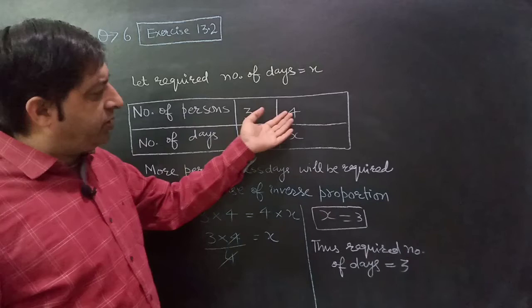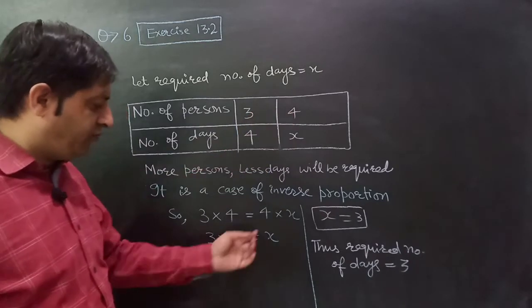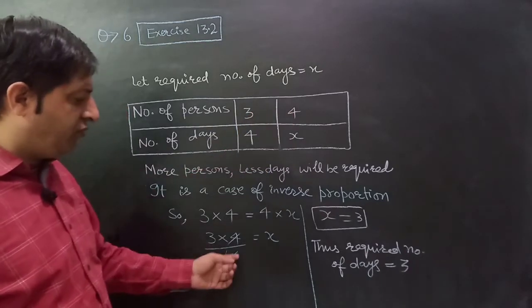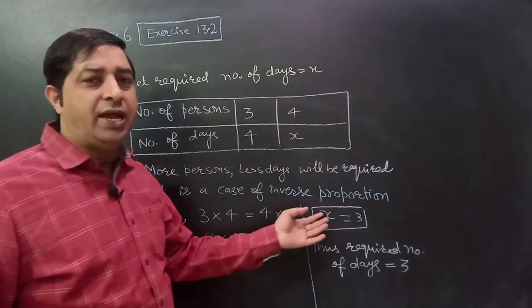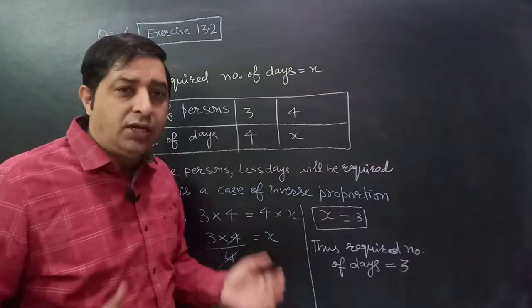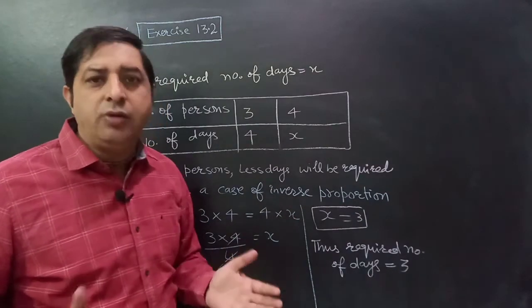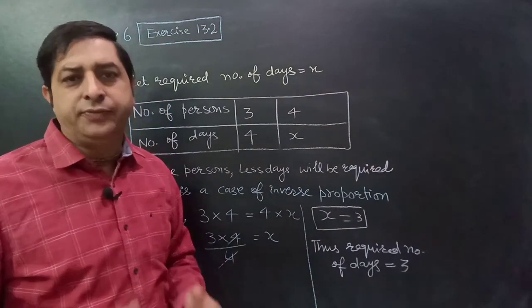So three into four must be equals to four into x. We shift four to this side, four and four cancel. And what we get: x is equals to three. Thus the required number of days is equals to three.